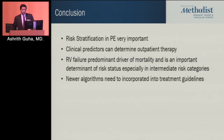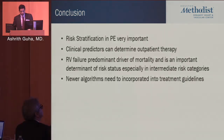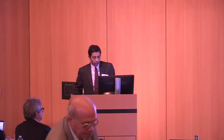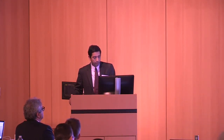In conclusion, risk stratification in PE is very important and clinical predictors can determine outpatient therapy. RV failure is a predominant driver of mortality and an important determinant of risk status, especially in intermediate-risk categories. Newer algorithms need to be incorporated in treatment guidelines, incorporating both the risk of ICH and the expected success of therapy. Thank you very much.